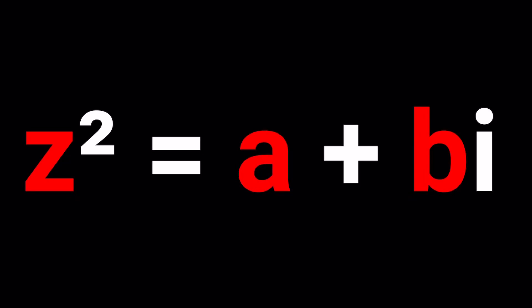Hello everyone, welcome to a plus bi. This channel is all about complex numbers and in this video we're going to find the square roots of a complex number which is in general form. So we have z squared equals a plus bi, which is also the name of this channel, and we're going to solve for z.